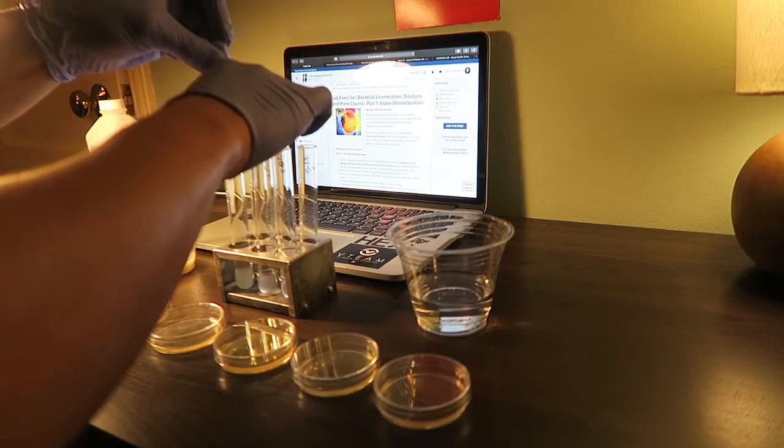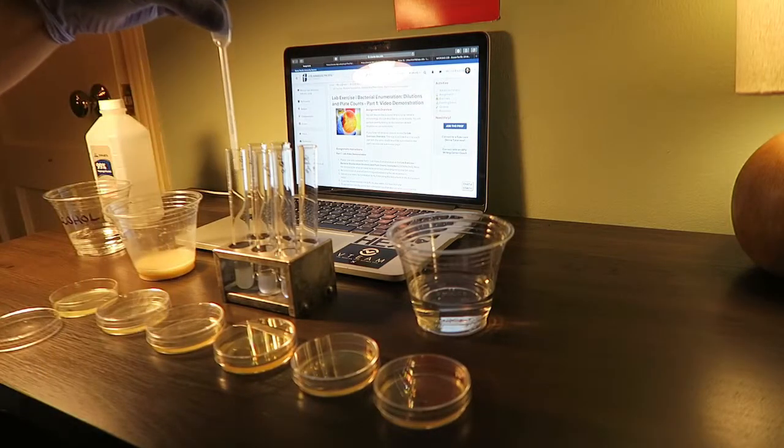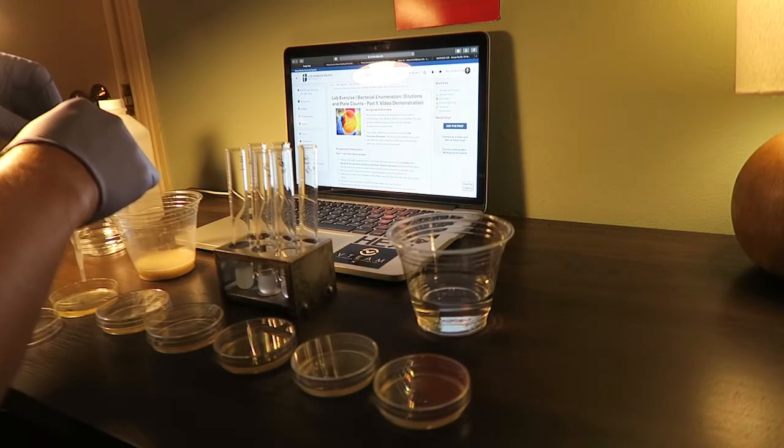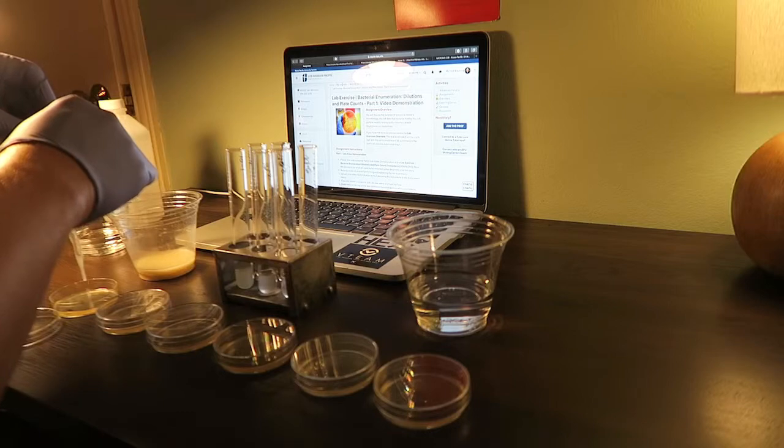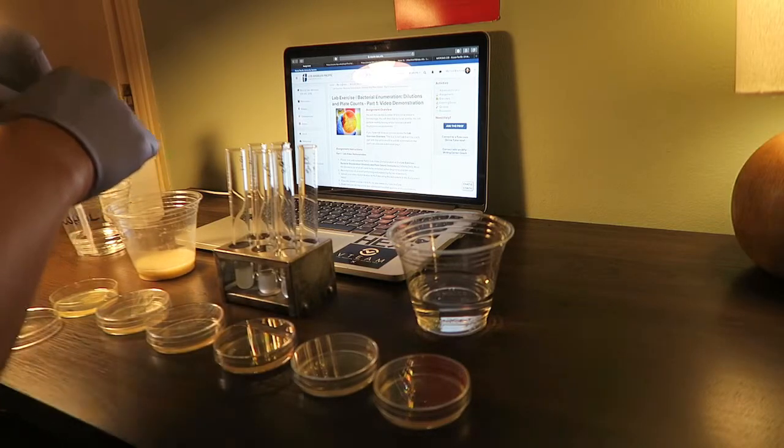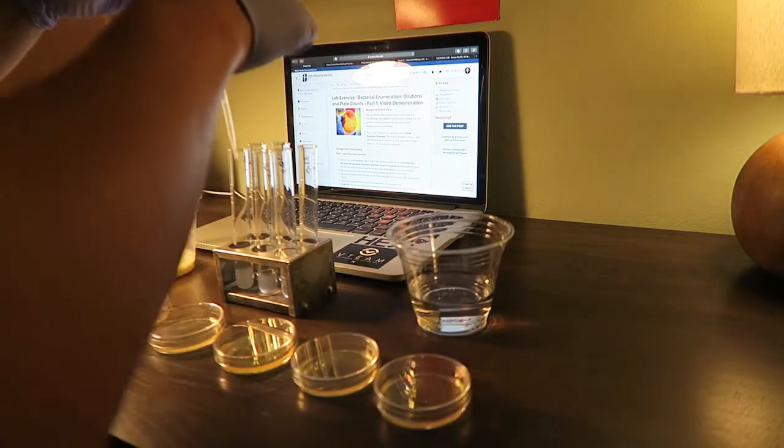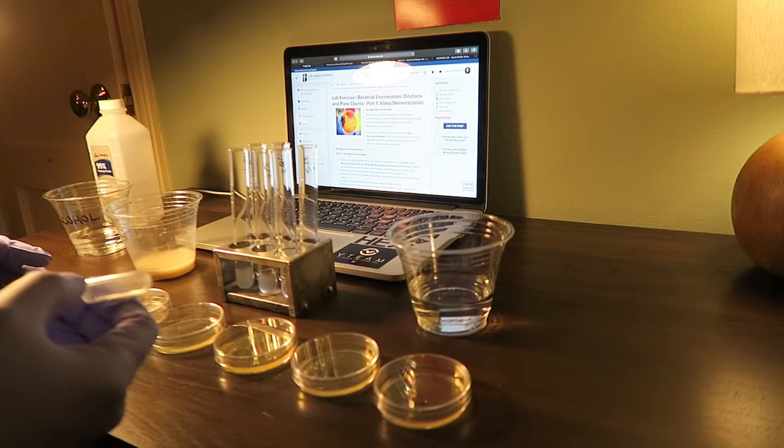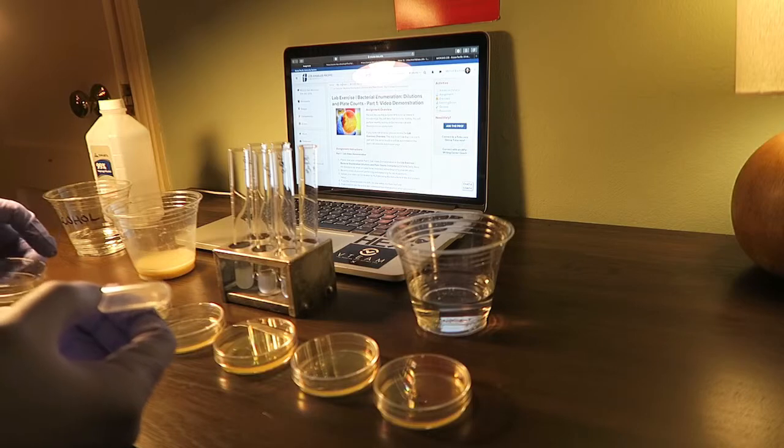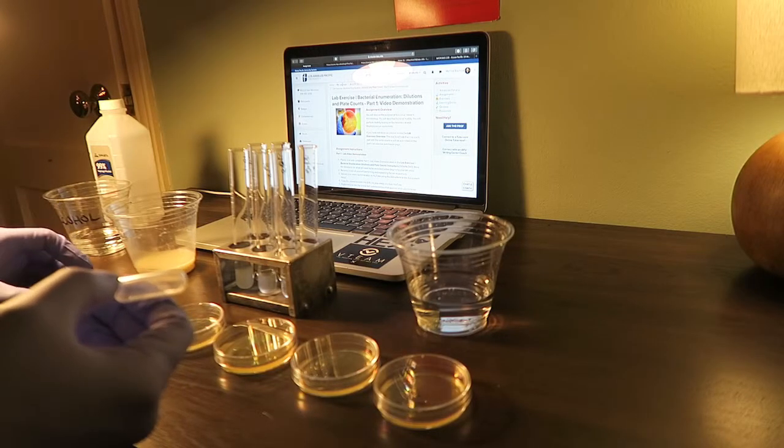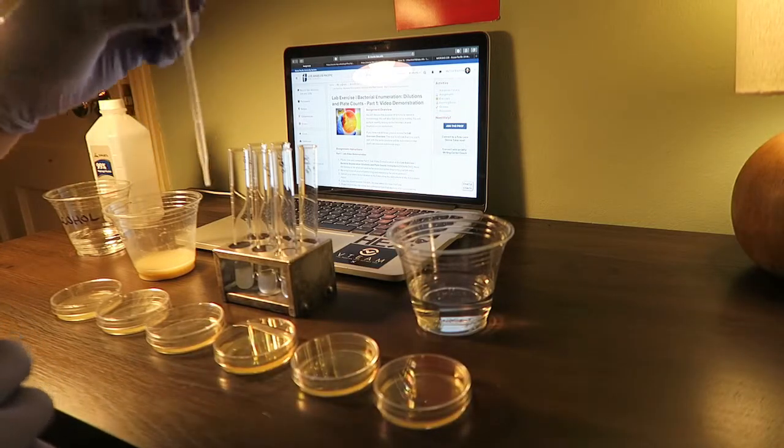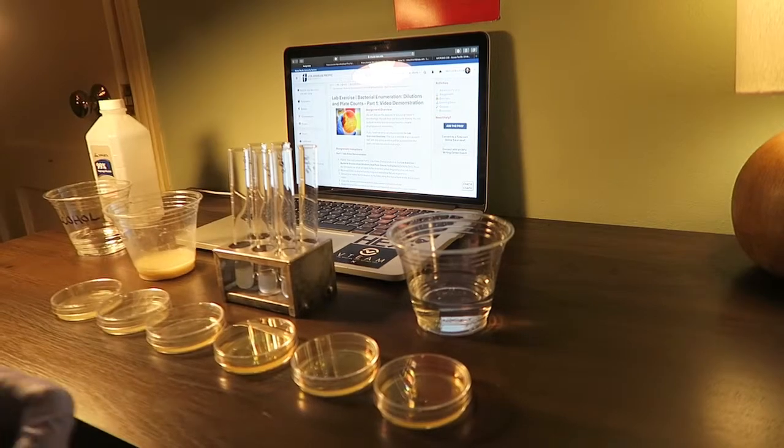We are going to do four drops, or 0.25 ml, into the inoculating plates. So, one, two, three, four. Then recap that and roll it around so it's all spread out. And I'll continue to do that for each tube, corresponding to each plate.